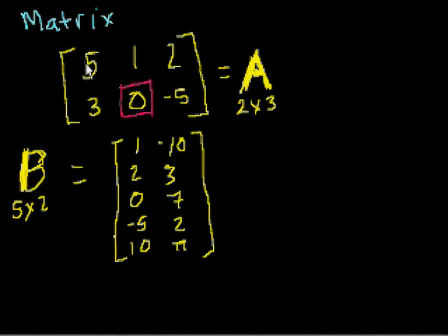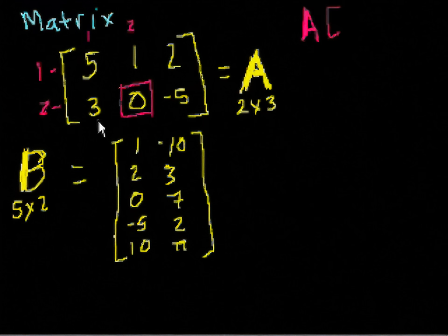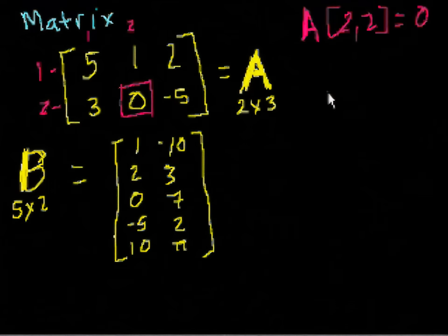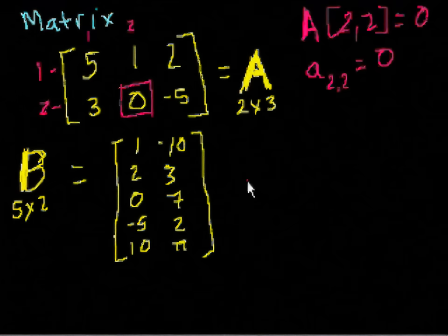So what is that? That is in the second row. It's in row 2, and it's in column 2, right? This is column 1, this is column 2. This is row 1, row 2. So it's in the second row, second column. So sometimes people will write that A[2,2] is equal to 0. Or they might write a lowercase a_{2,2} is equal to 0. These are just the same thing. I'm just doing this to expose you to the notation.